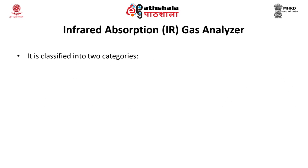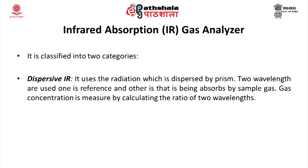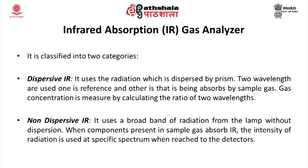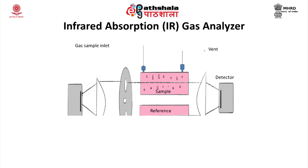IR analyzers are classified into two categories: dispersive IR and non-dispersive IR. Dispersive IR uses radiation dispersed by a prism; two wavelengths are used — one as reference and another absorbed by the sample gas — and gas concentration is measured by calculating the ratio of these two wavelengths. Non-dispersive IR uses a broad band of radiation from the lamp without dispersion. When a component in the sample gas absorbs IR, the intensity of radiation is reduced at a specific spectrum reaching the detector. Two detection methods are used: a gas detector and a solid-state IR detector.